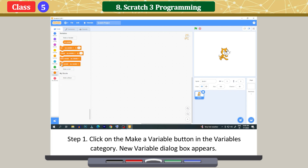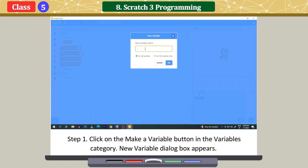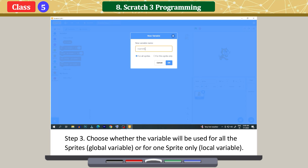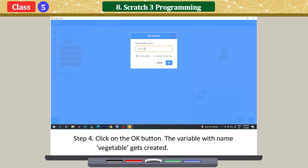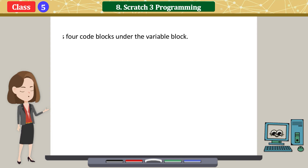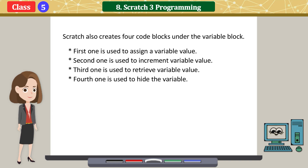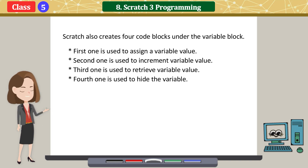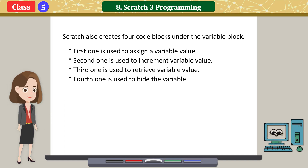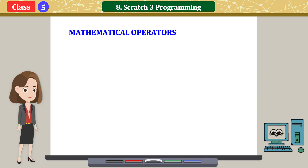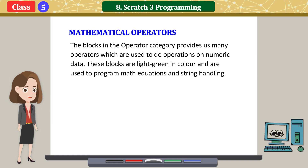Creating variables in Scratch: click on the 'Make a Variable' button in the variables category. A new variable dialog box appears. Type a name for the variable and choose whether it will be used for all sprites or for one sprite only. Click OK. The variable gets created. Scratch also creates four code blocks under the variable block: the first assigns a value, the second increments it, the third retrieves it, and the fourth hides the variable.